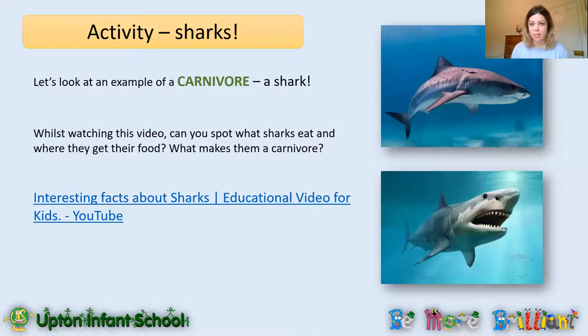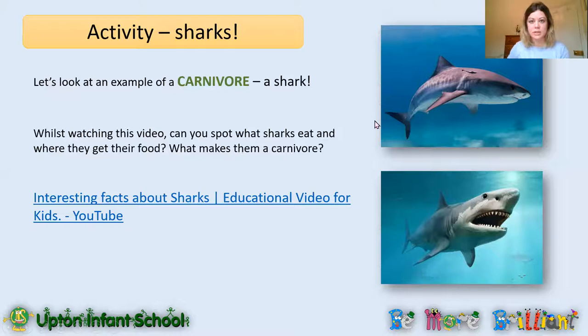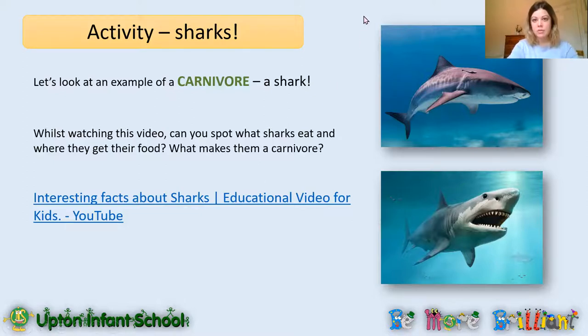So let's look at an example of a carnivore in more detail — this is our research. We're going to look at a shark. I thought a shark would be a good idea because we're all very lucky to live near the beach, by the ocean. But there aren't any sharks in our oceans near us. Still really interesting to look at what a shark eats. So we're going to watch a video now, and I would like you to see if you can spot what the shark in the video is eating and how it gets its food. What makes it a carnivore? What makes it a meat eater?